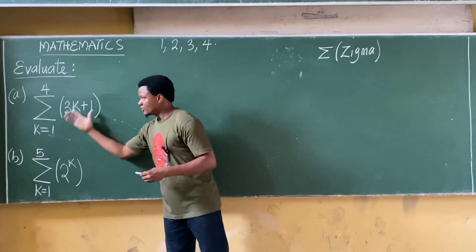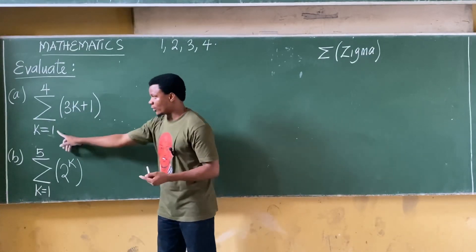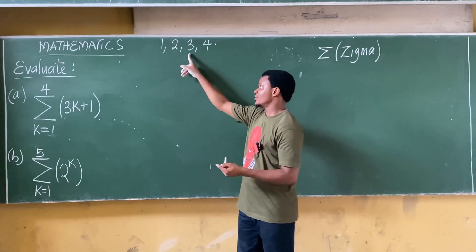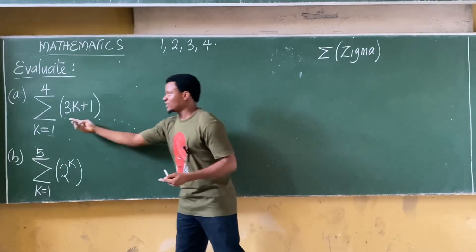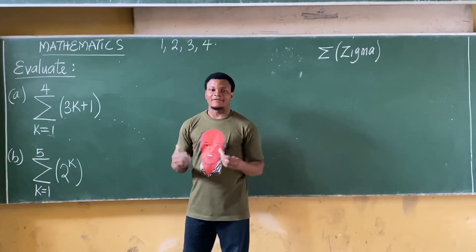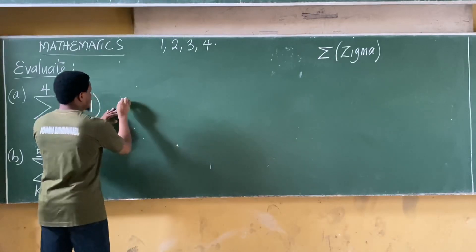In essence, for this summation here I'll be replacing the value of k. For each summation we'll put k as one, put k as two, put k as three, put k as four into this particular function and then we'll sum them up and see what our final answer will be.